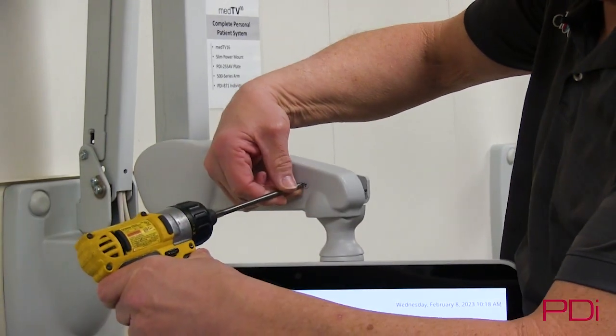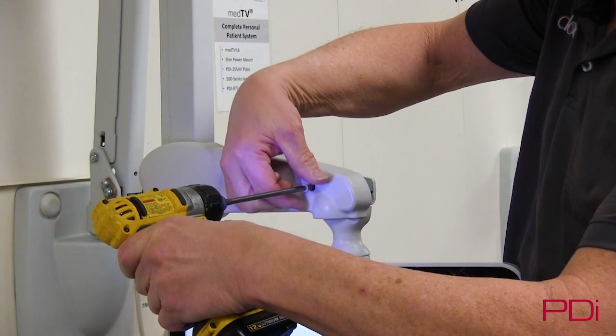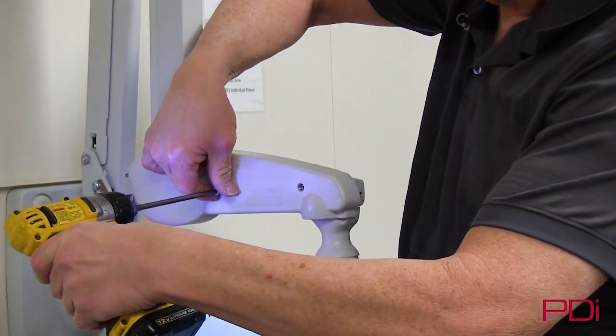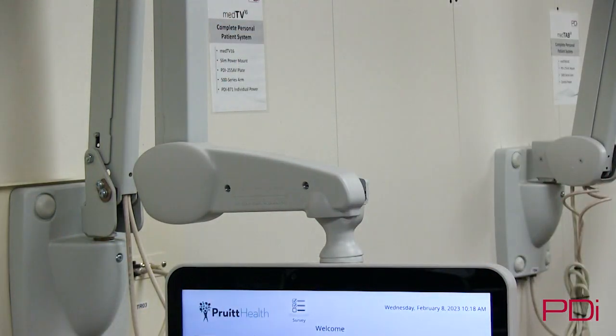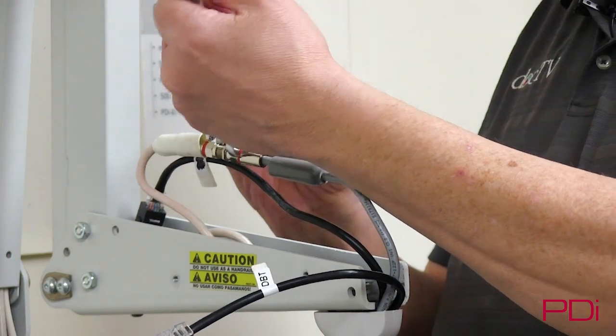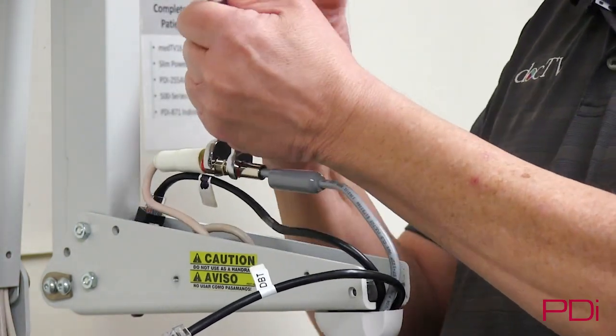First, you start by taking all the screws out here on the plastic cover, just take them loose. This is a 12-volt driver that doesn't have a lot of power, and that's what you need. You don't need a very big 18-volt driver to take this apart.